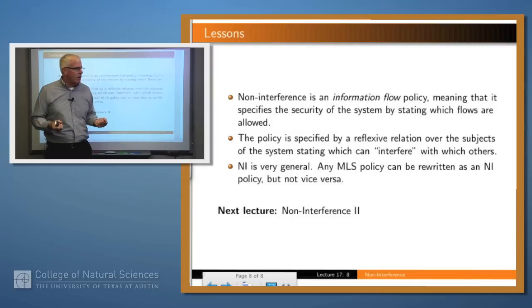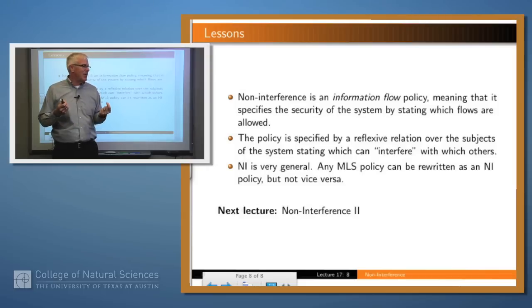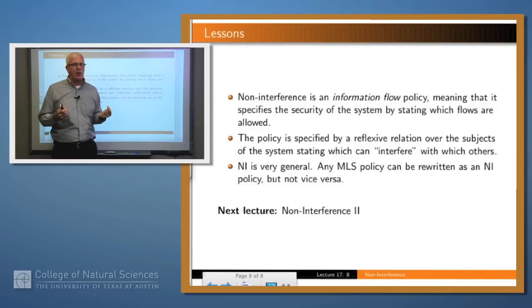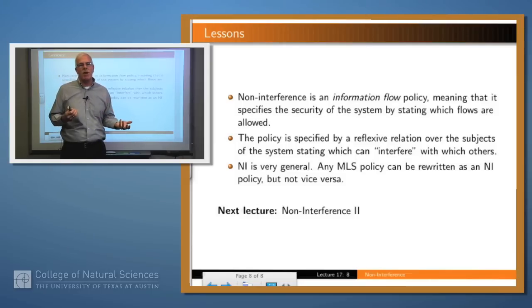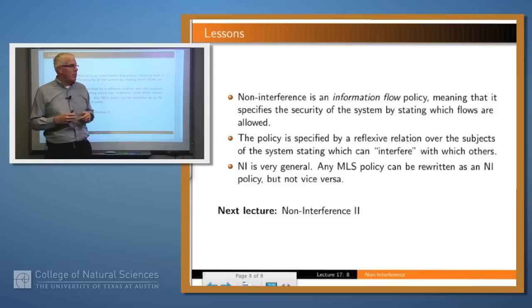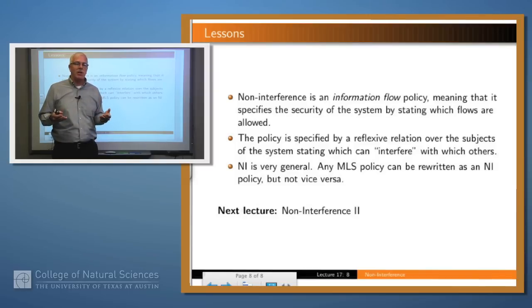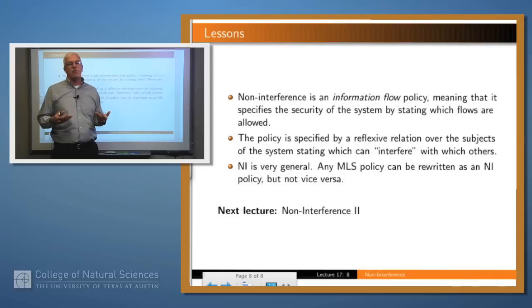So what have we learned? We've seen the beginnings of noninterference, which is an information flow policy more general than any MLS policy. The idea is that if you want to specify where information can flow in the system, you do that directly instead of worrying about rules constraining who can write or read a file. The policy is specified by a reflexive relation over the set of subjects, saying which subjects are allowed to interfere with or send information to which other subjects. Any MLS policy can be rewritten into a noninterference policy, but not vice versa.